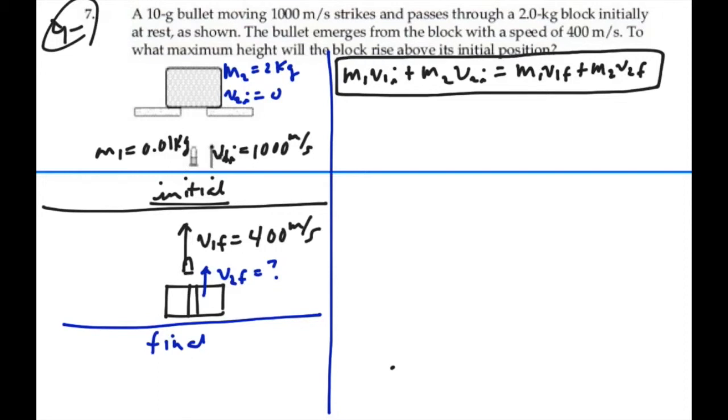So in this case, we have mass 1, which is .01 kilograms, moving at initial velocity of 1,000, plus mass 2, which is 2, moving at initial velocity of 0, is equal to mass 1, .01 kilograms, with a final velocity of 400, plus mass 2 with a final velocity, which we wish to find out. We have a bunch of numbers and v2 final, we can solve for this.